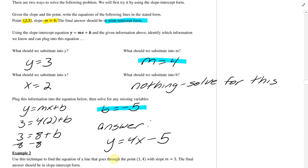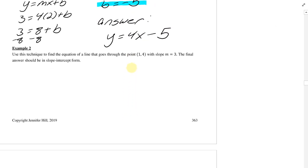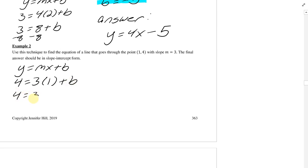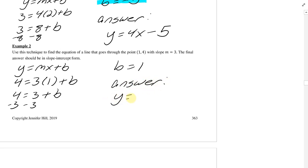Now I want you to basically repeat this exact process on your own, thinking through all these details — you have all the directions. Try example 2, pause the video, and hit play when you're ready. Plugging in the point and slope into y equals mx plus b gives 4 equals 3 times 1 plus b, so 4 equals 3 plus b. Subtract the 3 and get b equals 1. Then state your answer: y equals 3x plus 1. Remember, you're plugging in b and m — m was 3.